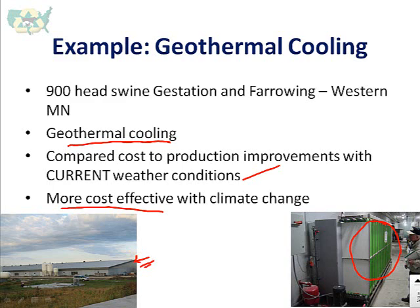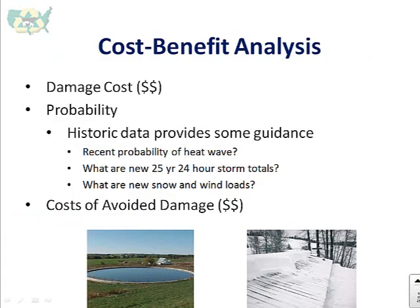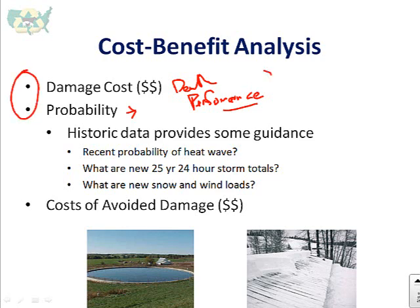There are many ways to look at this. First, we look at damage costs — death loss, performance — and the probabilities of those impacts. The probability of a flood event, a heat wave, a drought, all come into play in estimating the probable damage cost. Not an easy calculation to make.